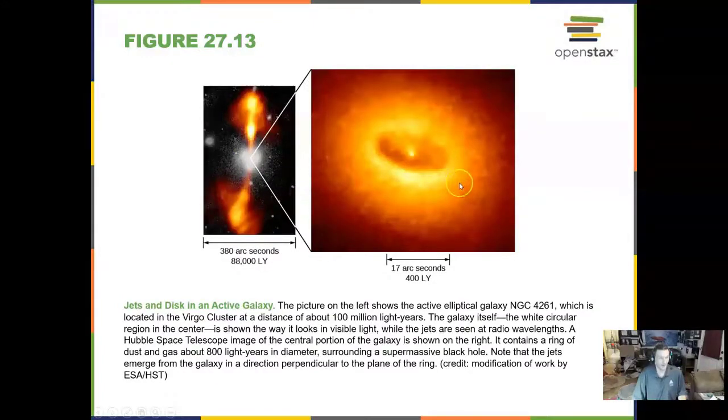Here is a jet in an active galaxy. Active is meaning, think of an active volcano, it's erupting, it's doing something. So here we see this jet from this donut-shaped torus around this object, and we see these jets coming out.